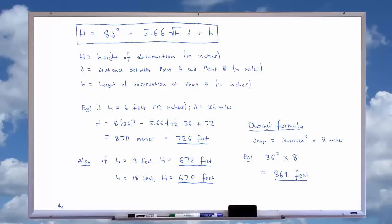The greater the height of the observer, the more pronounced the variation becomes. At a height of 12 feet, the obstruction is 672 feet.